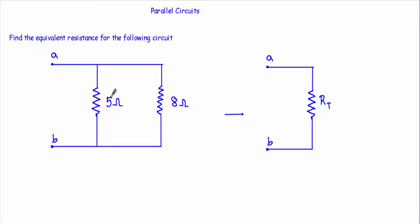When one end of each resistance is joined to a common point — this end of the 5 ohm resistor and this end of the 8 ohm resistor are joined at this common point — and the other end of each resistor is also connected to another common point. Since they are connected at common points, I can say our 5 ohm and 8 ohm resistances are connected in parallel.